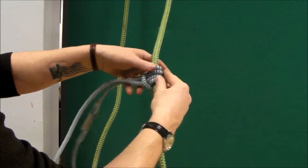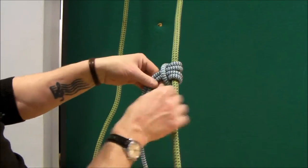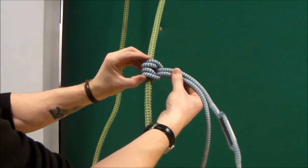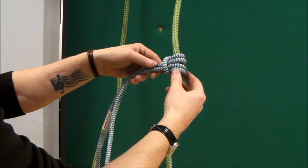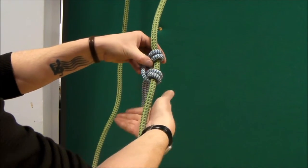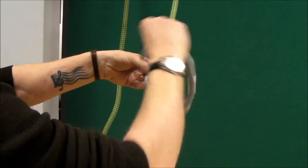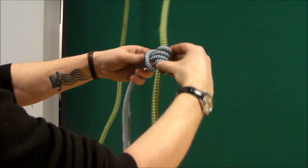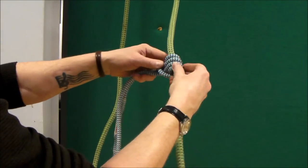This is a Prussik loop knot. That's what it looks like from the back. And that's what it looks like from the front. If it starts to slip a little bit, there's nothing to stop you putting another wrap around. But just for the sake of this demonstration, we'll do two wraps.